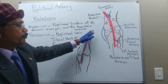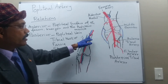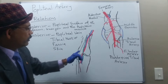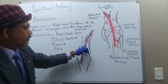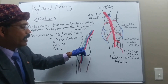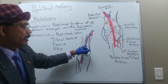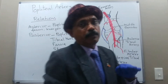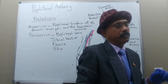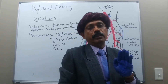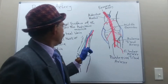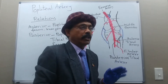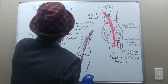In the lower part, the popliteal vein is lateral; as it goes up, the popliteal artery is medial and the popliteal vein is lateral. The tibial nerve is more superficial than the popliteal vein and the popliteal artery. So the popliteal artery is the deepest structure among the three: superficially the tibial nerve, then the popliteal vein, then the popliteal artery.